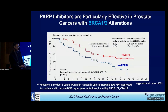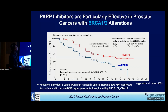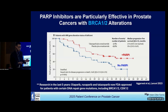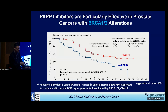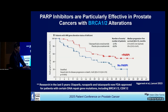Another example published about two years ago: for patients who have mutations in BRCA1 or BRCA2, a class of drugs called PARP inhibitors really targets the Achilles heel of the cancer and does benefit patients with these BRCA1 and BRCA2 alterations.